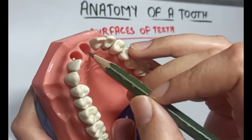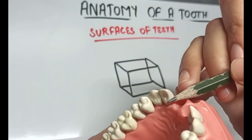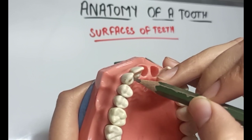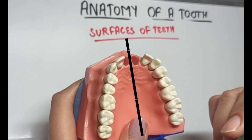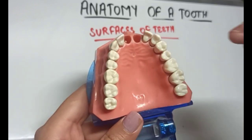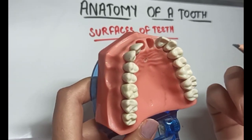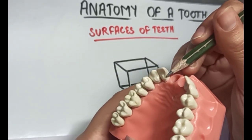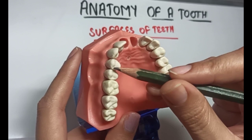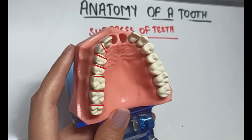The sides of the tooth are called the proximal surfaces. Now imagine a midline drawn vertically through the center of the face between the central incisors. M for midline, M for mesial — the surface of the tooth that is towards the midline is called the mesial surface.